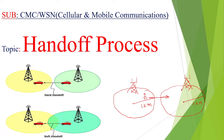Without interrupting a call, the call is handed off to the next cell site — without breaking or without interruption, the call will be automatically connected to the next cell site. This is called the handoff process. The call is connected automatically from the present cell site to the next cell site using MTSO, the Mobile Telephone Switching Office.